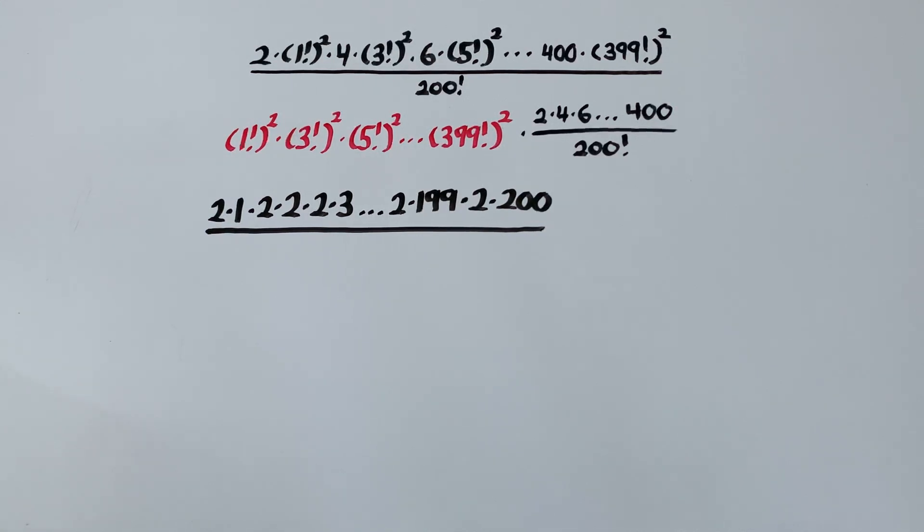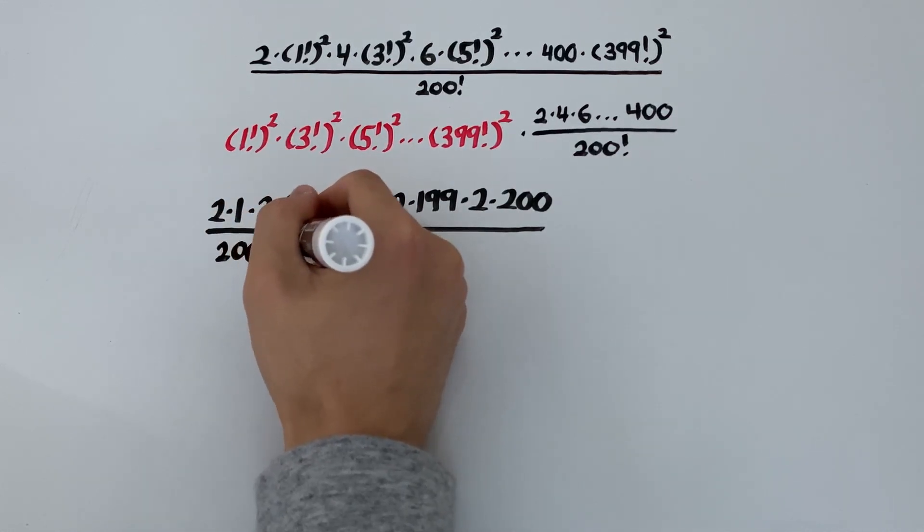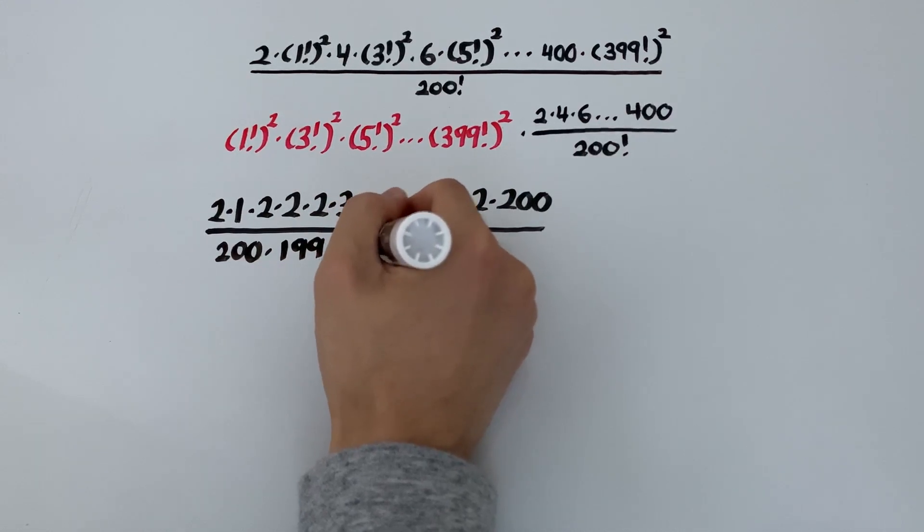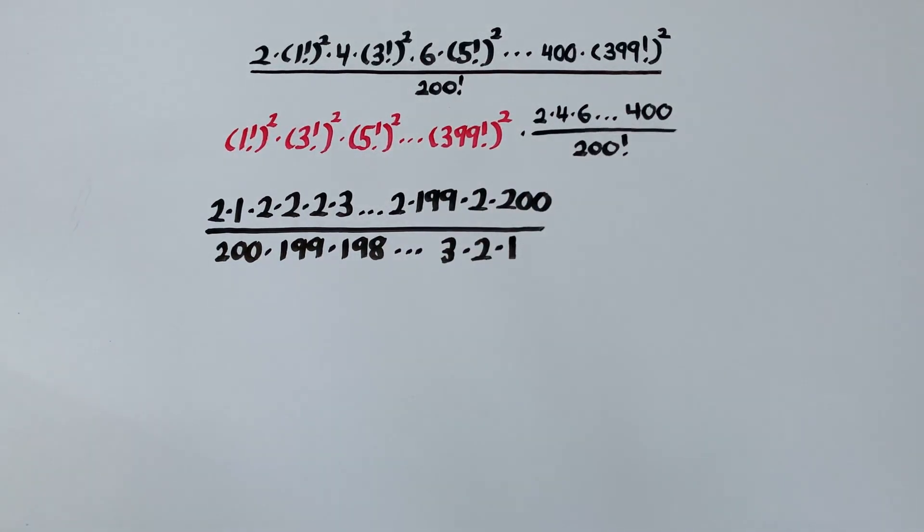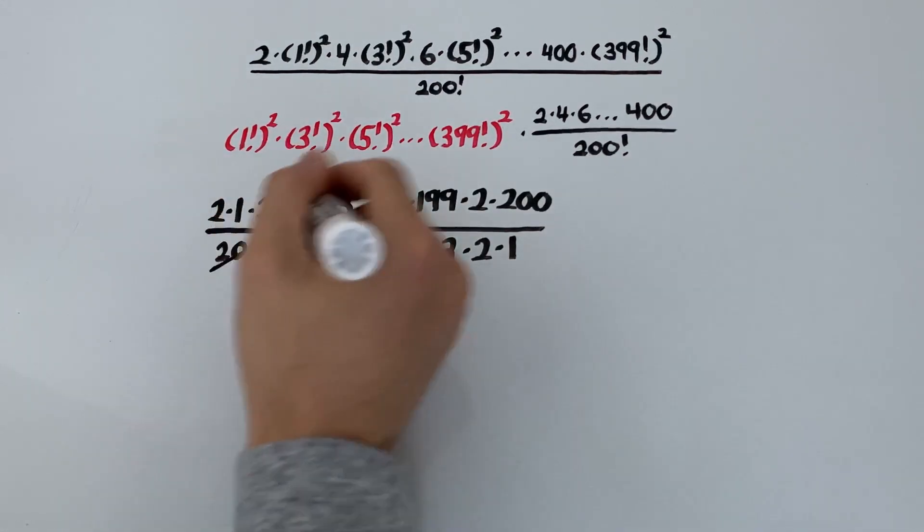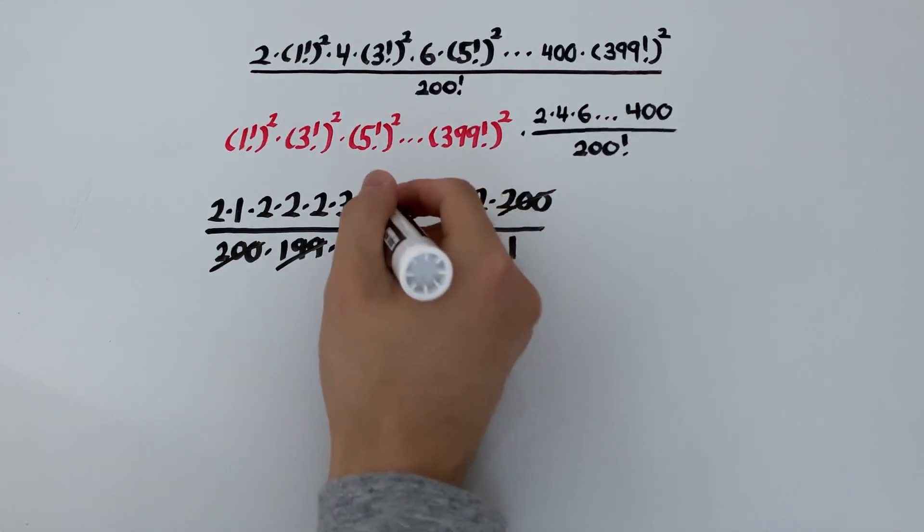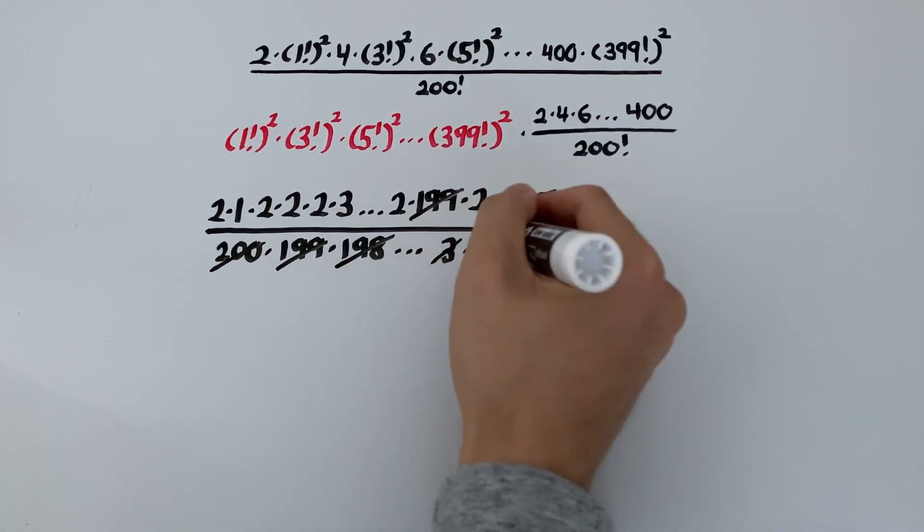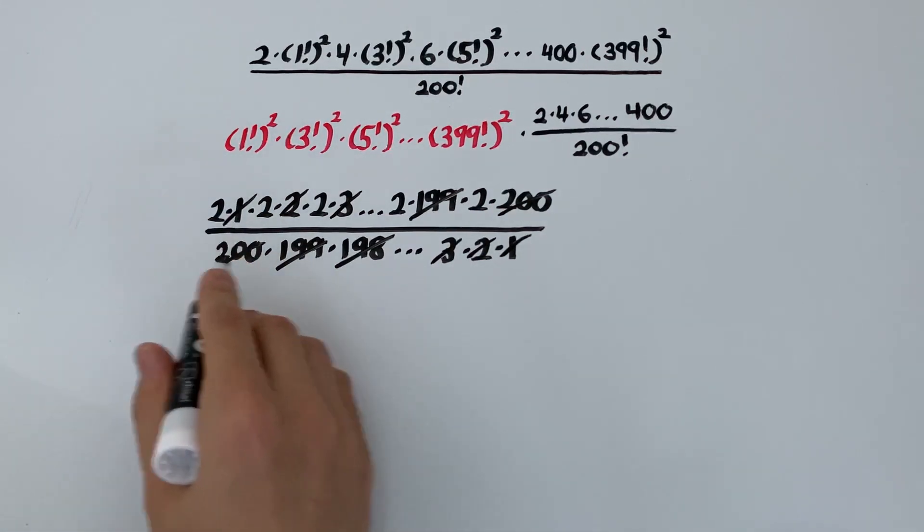Now I think that it's going to help us a lot if we just write out the definition of 200 factorial. And I think you'll see why in just a moment. So 200 factorial is the same as 200 times 199 times 198, all the way to 3 times 2 times 1. So why did we do this? There's a 200 here, and a 200 over there, 199 and 199. 198, 198 is going to be somewhere over there, but 3, 2, 1 all go away. So in fact, the denominator is completely gone.